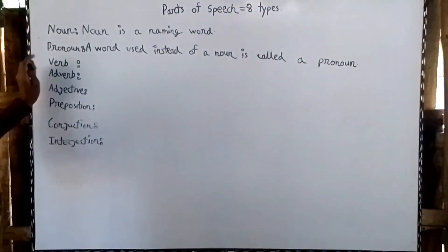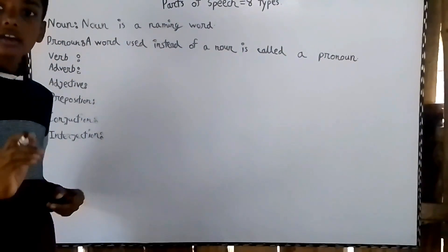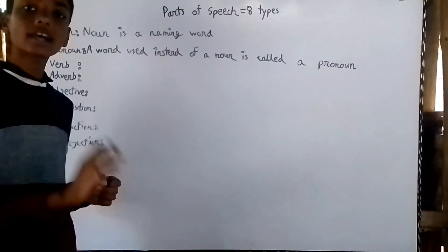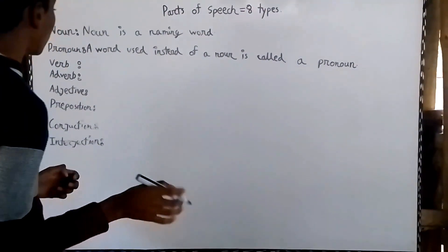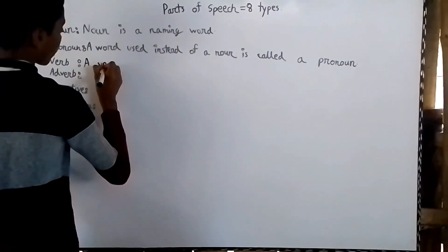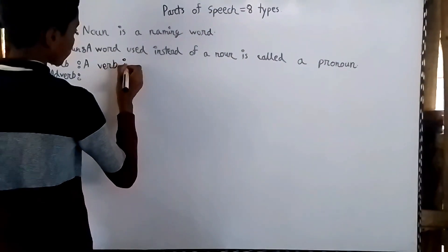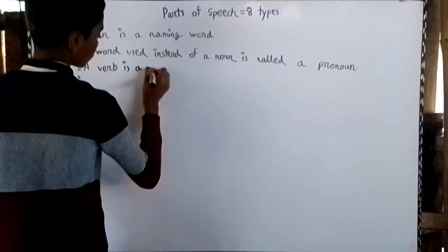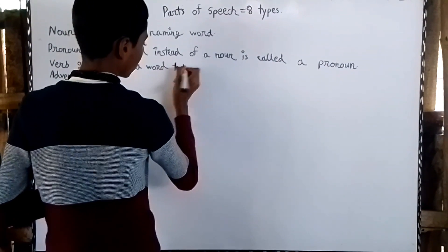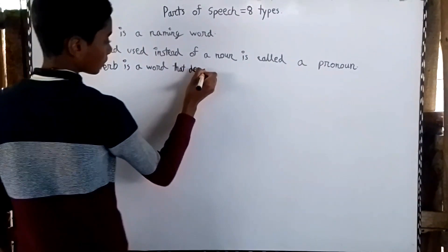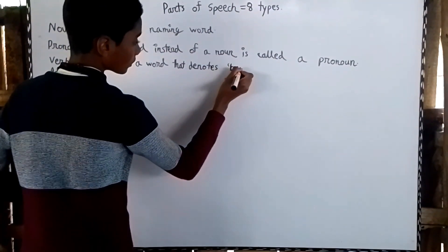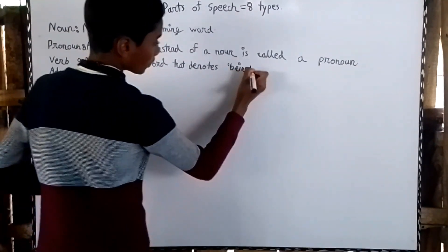A verb is a word that denotes being, having, or doing, or an action in any form, is called a verb.